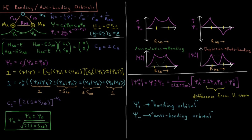Now we want to solve for the coefficients—the molecular orbitals themselves. We do that by subtracting ESC from both sides, giving us H minus ES, the matrix, acting on vector C, equals a zero vector. From the previous video, our matrix has elements: HAA minus E, HAB minus E·SAB, HAB minus E·SAB, and HAA minus E, where HAA and HAB are Hamiltonian matrix elements, SAB is the overlap of the two basis functions, assumed individually normalized. This matrix times the vector (cA, cB) equals zero.